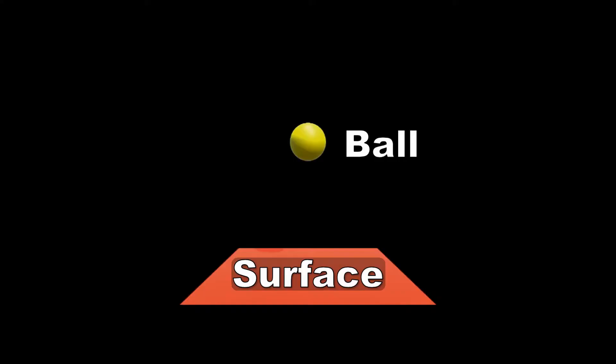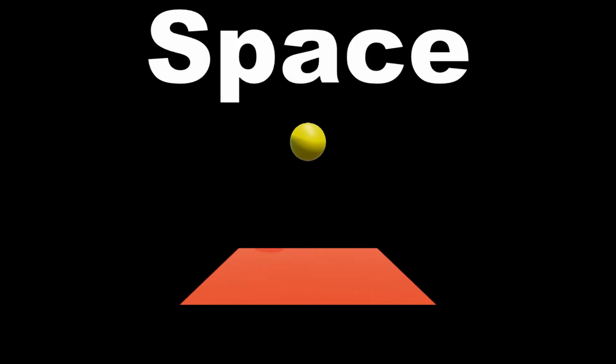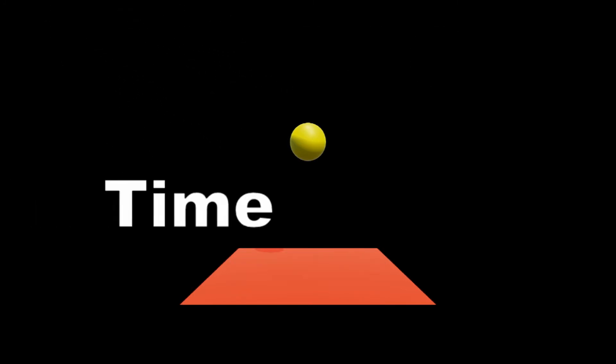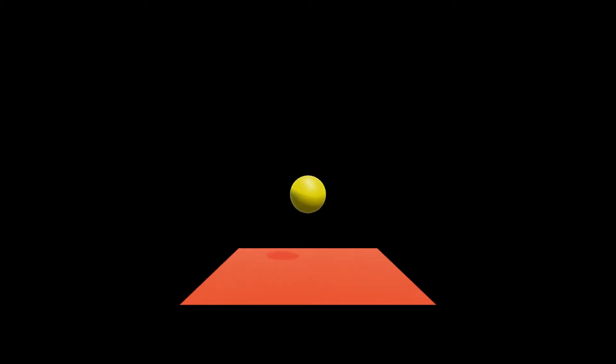The next thing to talk about is a virtual environment. Think of a video game — everything in it is completely virtual, which means that everything has been generated by a computer. For example, the ball and surface are virtual. Not only that, but the space is virtual, and so is the lighting. Even the time in it is virtual. Everything in it is virtual, including the bouncing interaction of the ball with the surface.